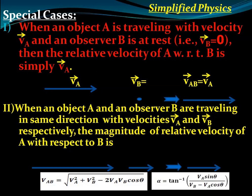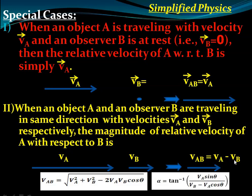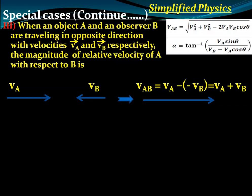For the same-direction case: using the formula with theta equals zero, cos theta equals one, so V_AB equals the square root of (V_A minus V_B) squared, which gives V_AB equals V_A minus V_B.